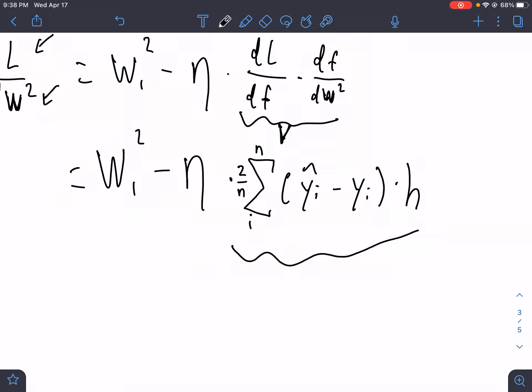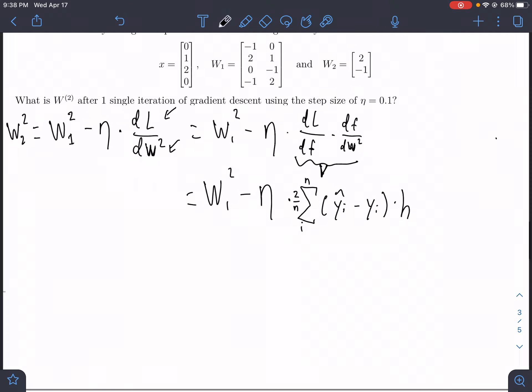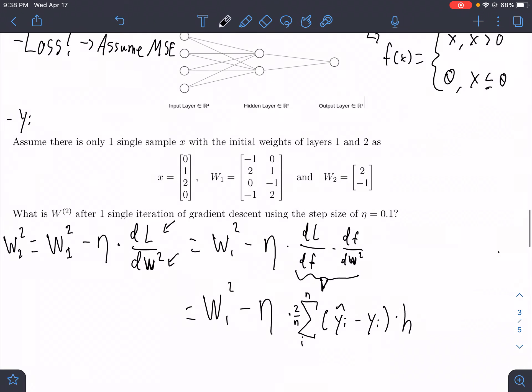So what is this? This chunk right here is the derivative of the mean squared error function. We do the power rule, there is originally a 2 here that comes down, and that's where we get the 2 over n from. The h is from df dw2, and you'll see where that comes from later. How are we going to get all of these values? We're given some of them, and we need to find y hat i and h.